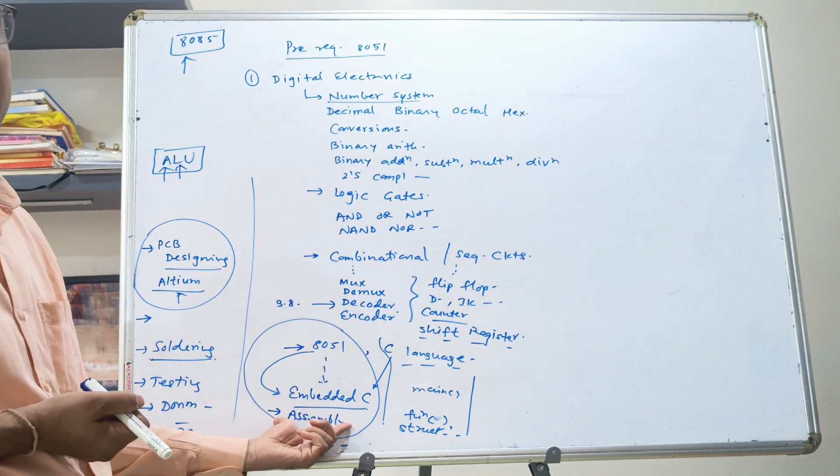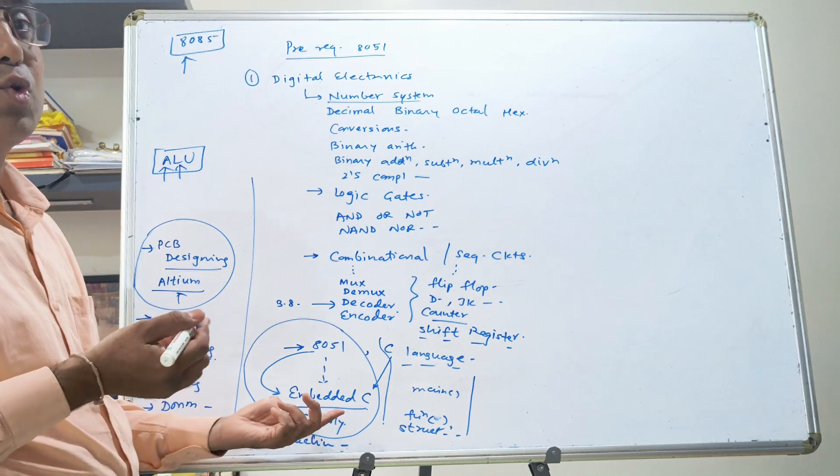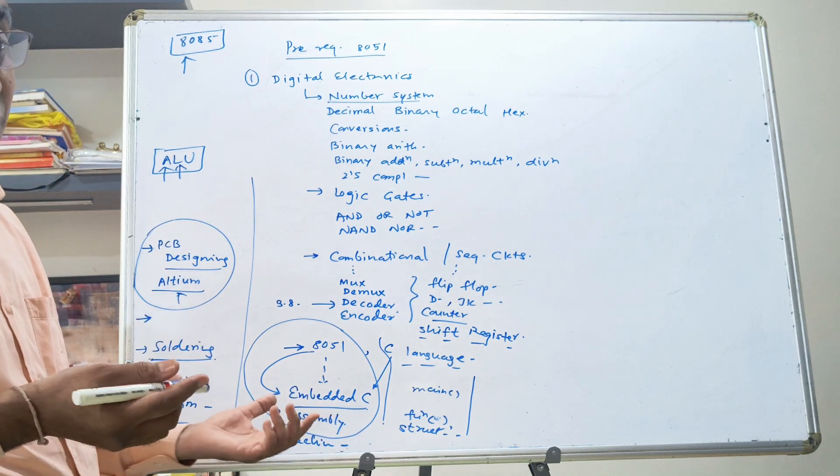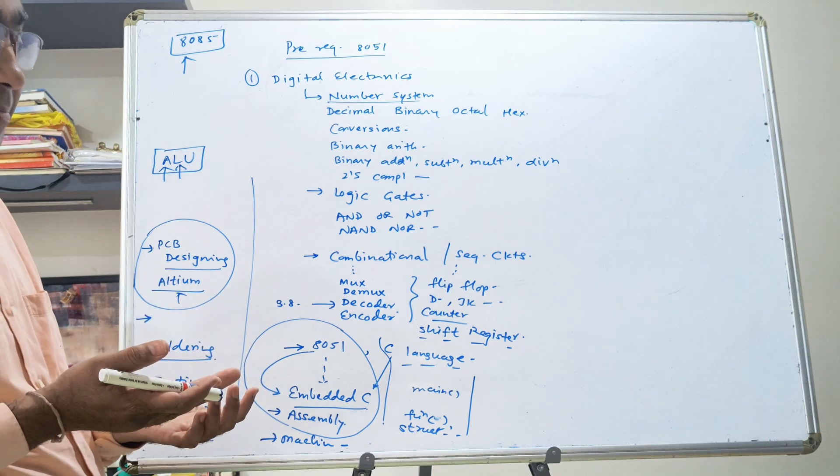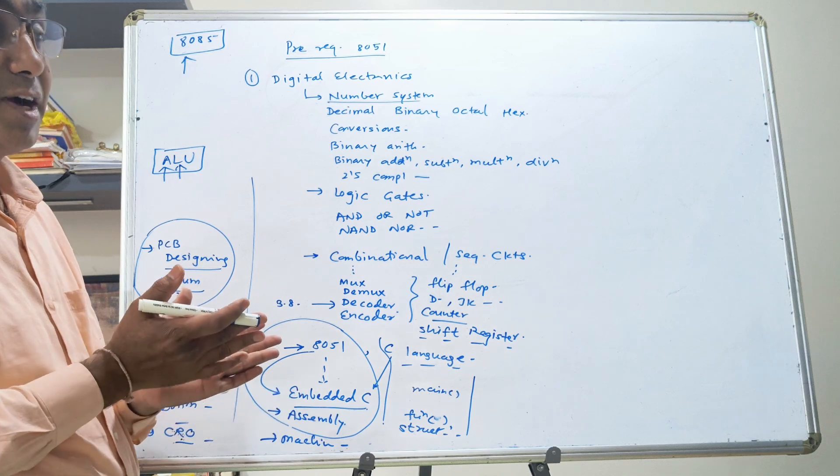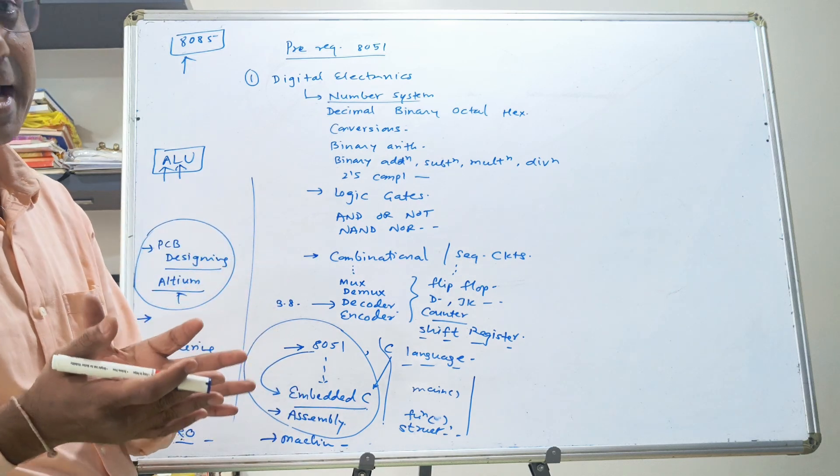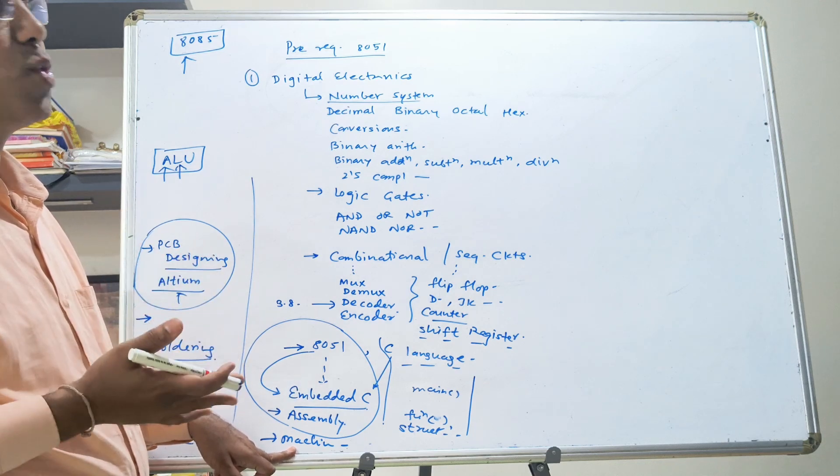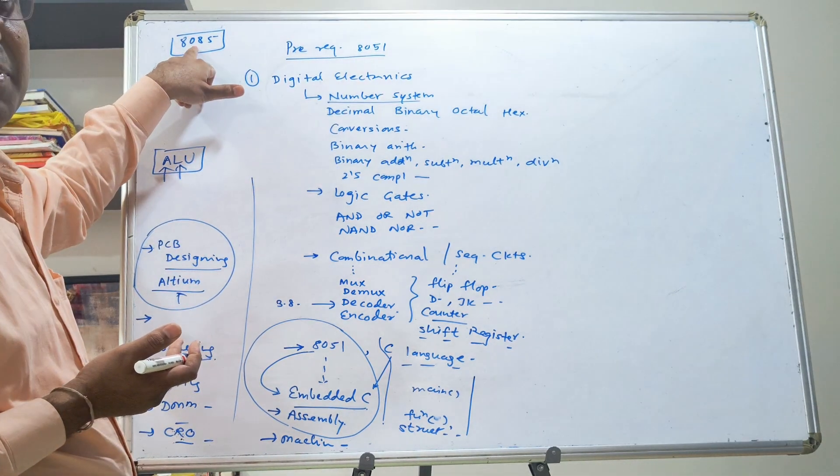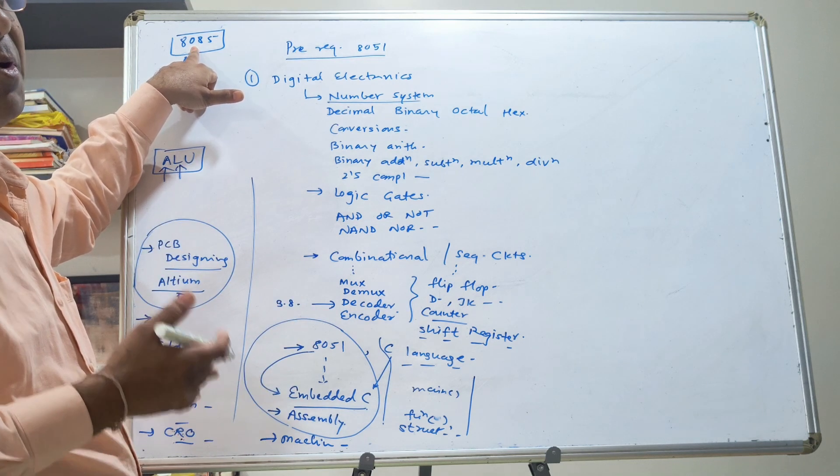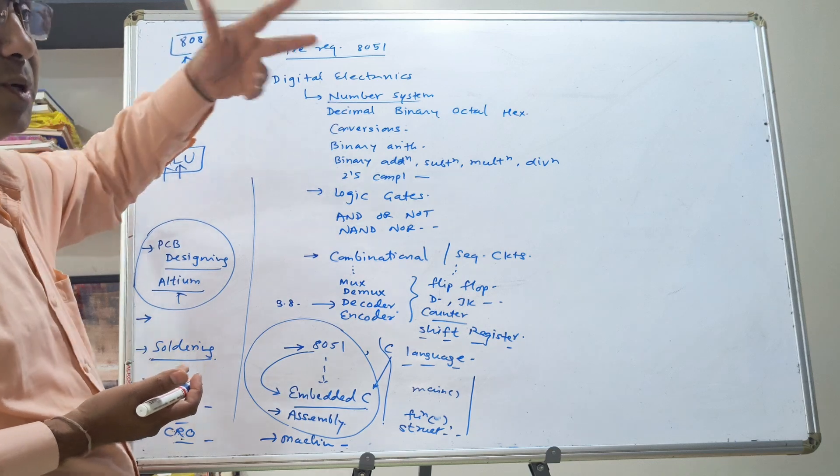Like MOV, ADD, these type of instructions. Then we follow the data sheet. We used to follow the data sheet and from that we find out what is the code of MOV, what is the code of ADD. And that is the machine language. Then we start feeding those codes in the memory of 8085, external RAM maybe, where we want to execute the program from that location.